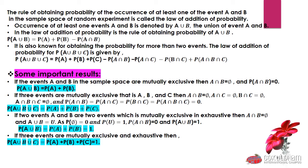Similarly, if 3 events A, B, and C are mutually exclusive, then A∩B = φ, A∩C = φ, B∩C = φ, and A∩B∩C = φ, and all their probabilities become 0. Substituting these zeros into the formula, P(A∪B∪C) = P(A) + P(B) + P(C).